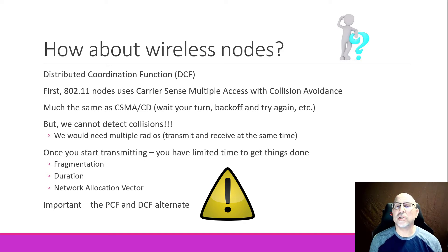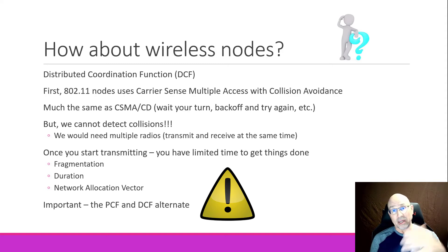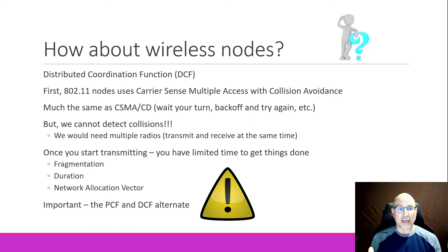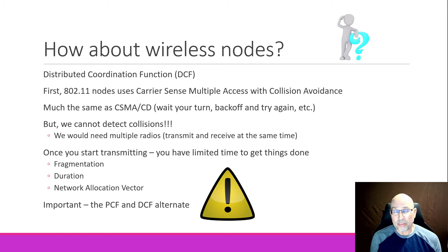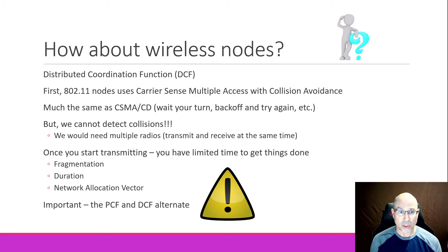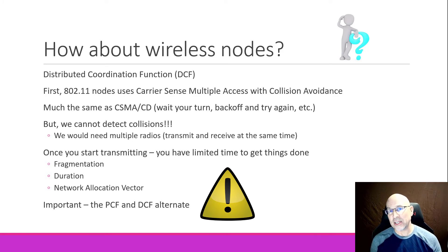But we're going to do something called Collision Avoidance. We're going to talk more about how nodes get their data done in a later video, but for right now we have to realize that in a wireless network, we cannot detect collisions. Why? Because we can't listen and transmit at the same time — that would require extra radios. So because we don't do collision detection, we have to do something called Collision Avoidance.